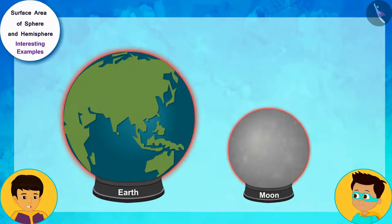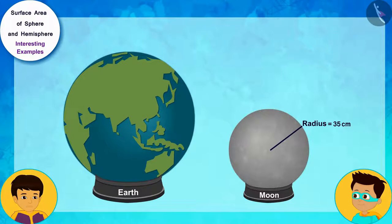Look, Thomas. The models of both the moon and the earth are hollow spheres. The radius of the moon's model is 35 centimeters and the radius of the earth's model is 140 centimeters.